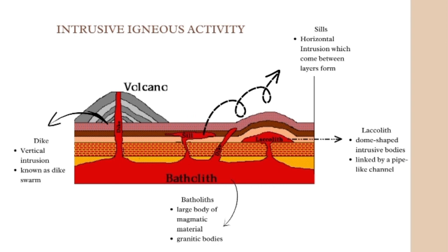A laccolith is a body of intrusive rock with a dome-shaped upper surface and a level base, fed by a conduit from below. It forms when magma rising into the earth's crust begins to spread out horizontally, prying apart the host rock strata. The pressure of the magma is high enough that the overlying strata are forced upward, giving the laccolith its dome-like form. Erosion can expose intrusive activity and bring it to the surface. Batholiths are a great example — they are formed deep beneath the earth's surface when magma cools and solidifies, forming large crystals in rocks such as granites.